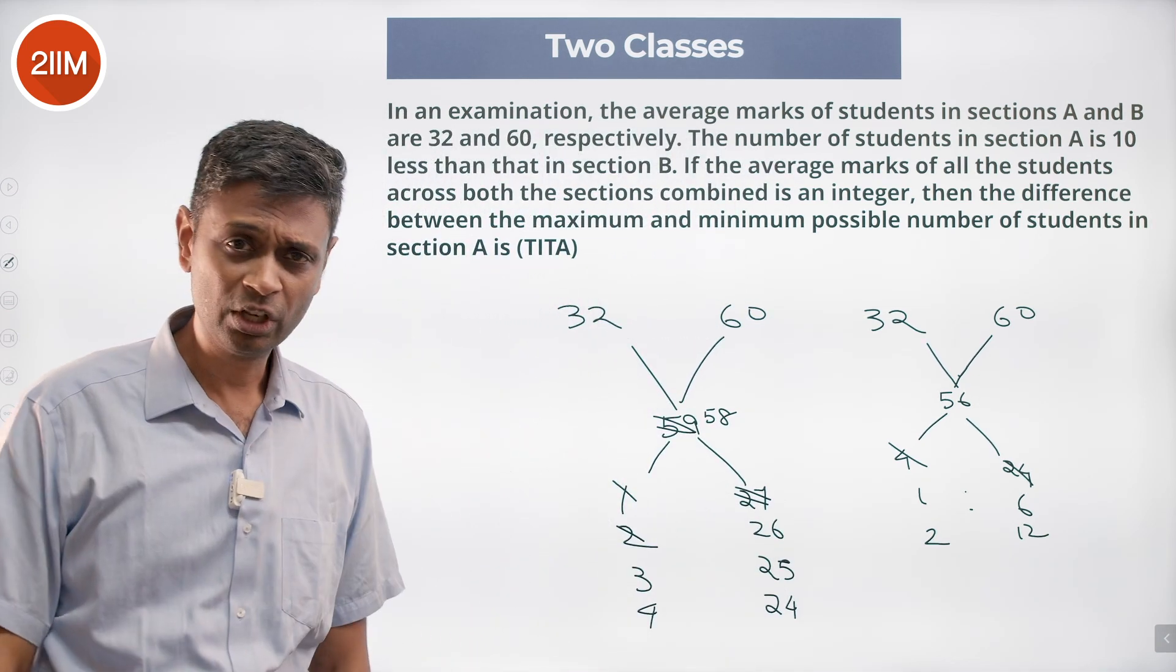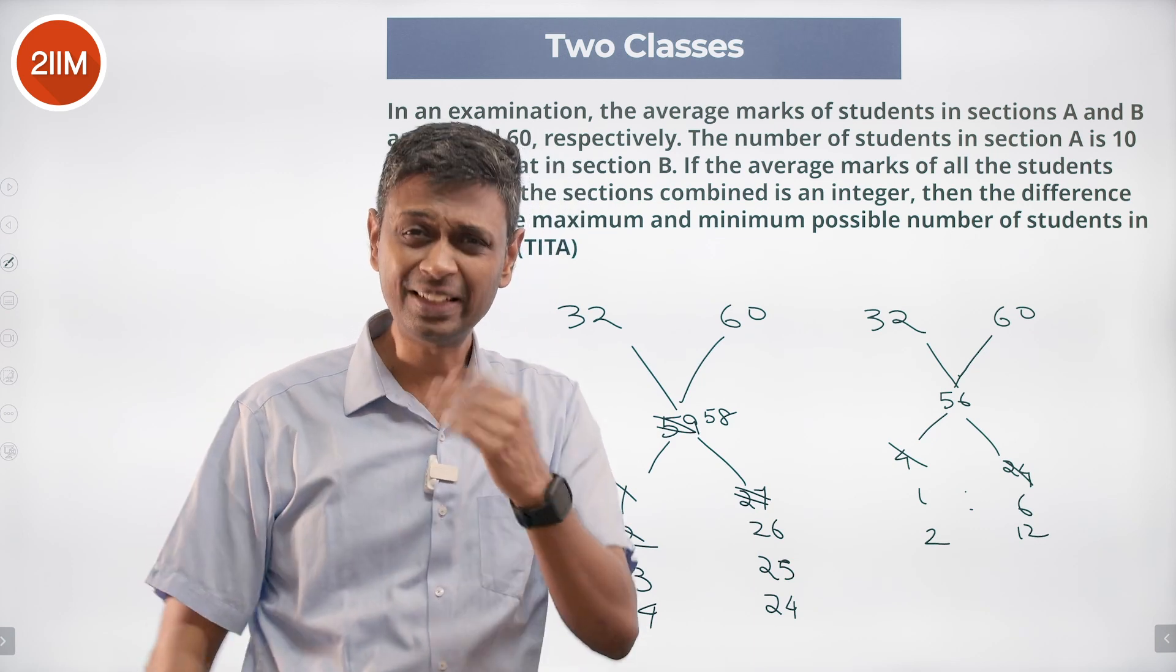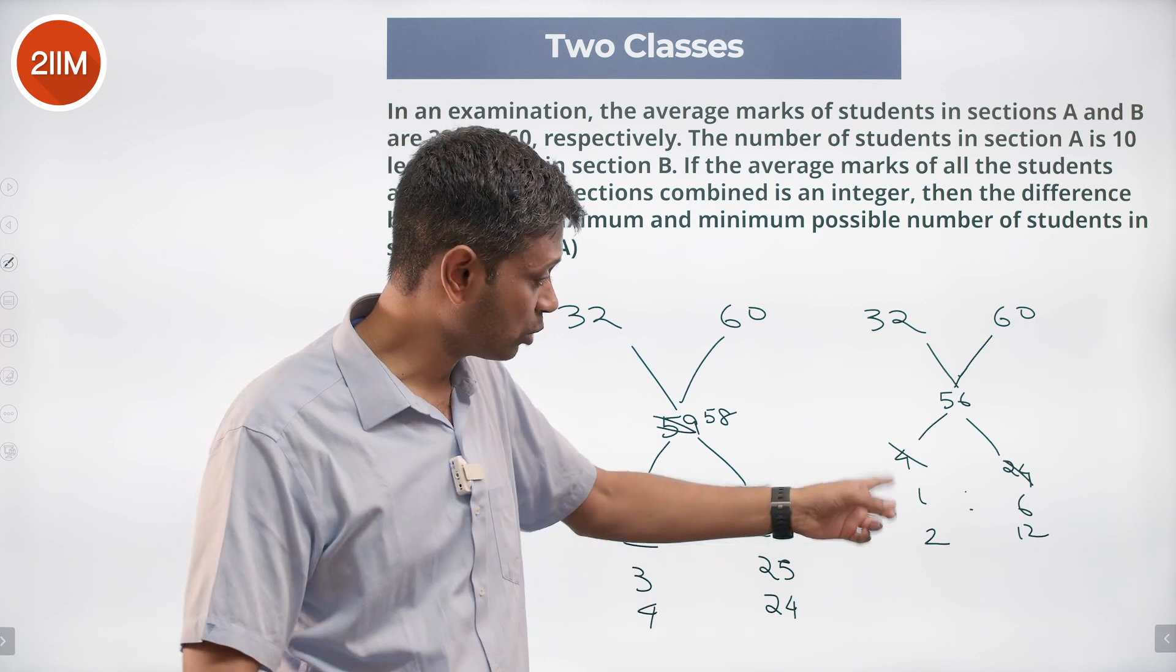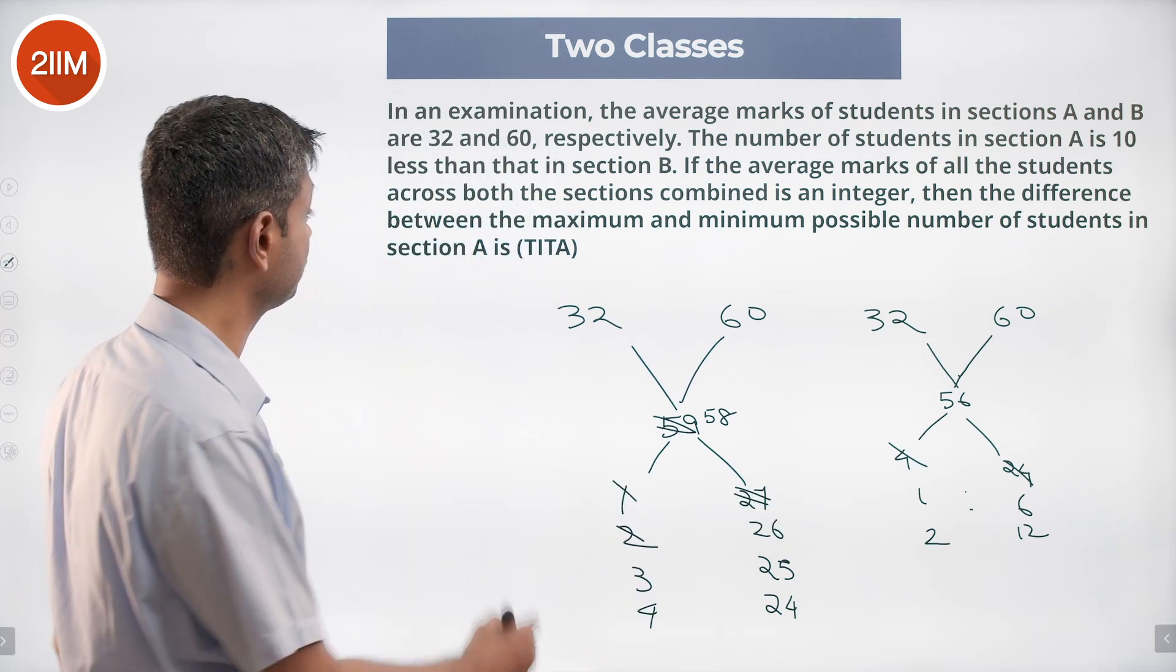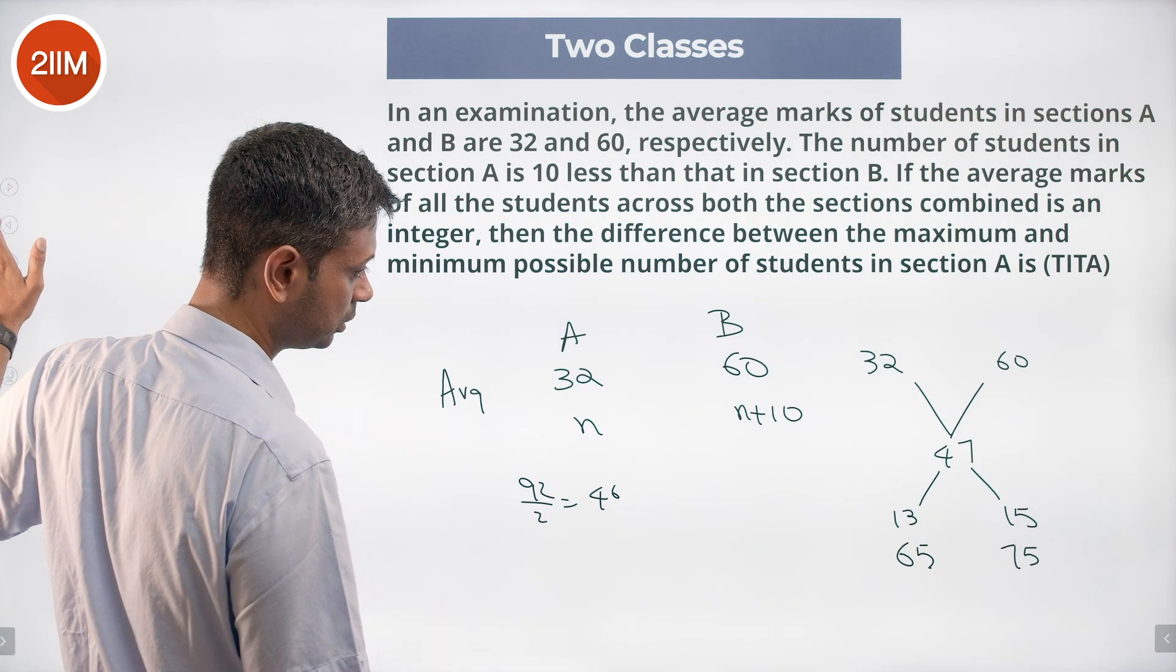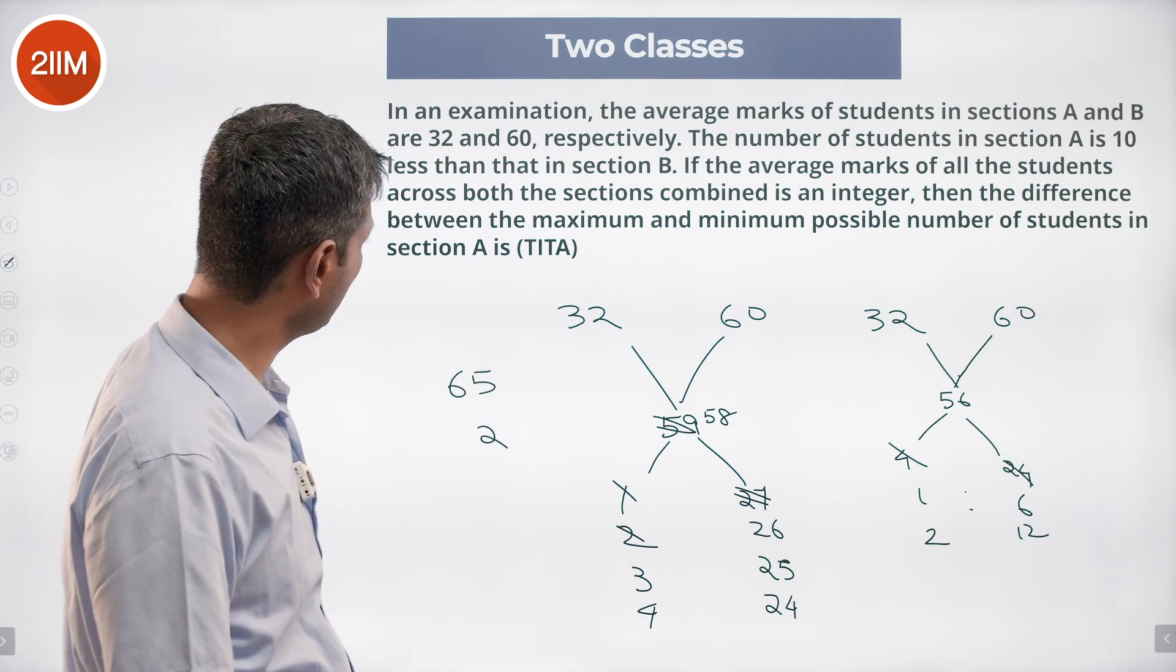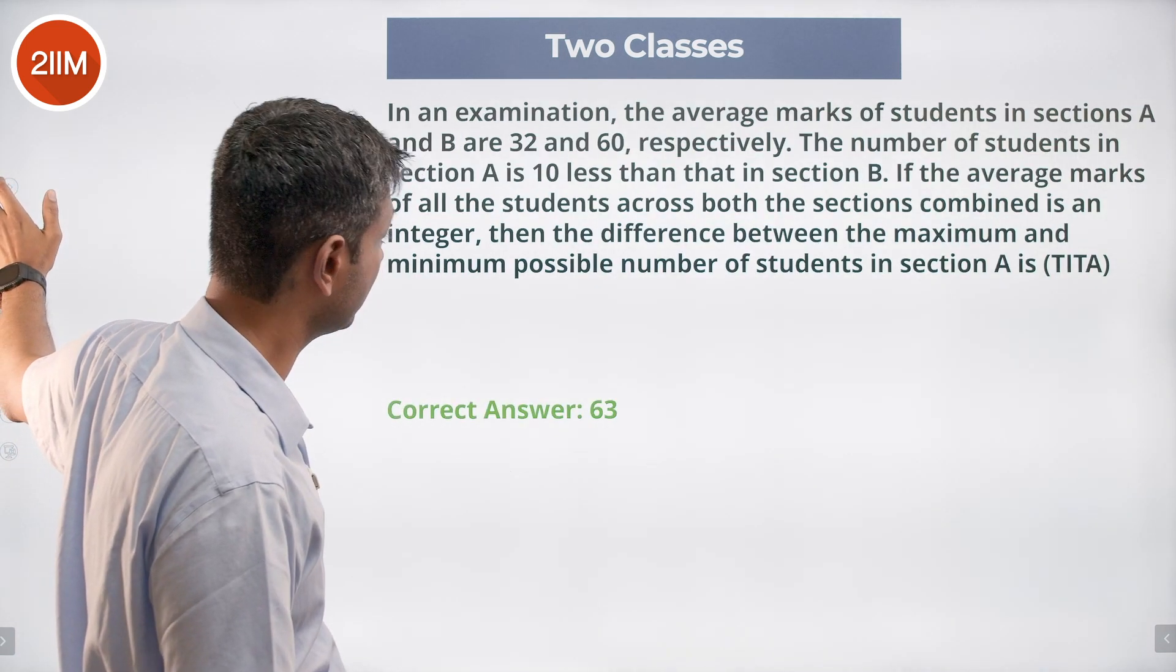So the other extreme when we take the ratio to be 4 and 24, the difference is 20X. 20X cannot be 10 but 4 is to 24 which is 1 is to 6, 5X can be 10, which is what we are plugging here, 2 and 12. So the number of students minimum number can be 2, maximum number if we did here can be 65. In class A the difference between the maximum and minimum possible number of students in A, 65 minus 2, 63 should be the answer.